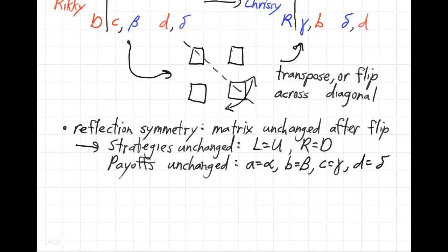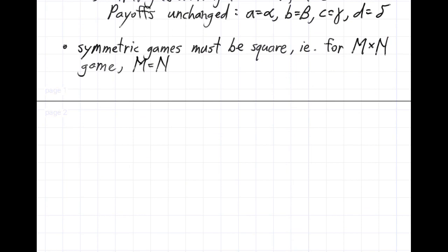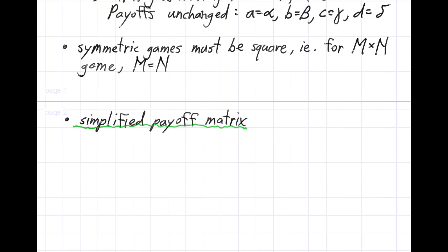A small but important point: symmetric games must have square matrices. For a general M-by-N game, we must have M equal to N — the same number of rows as columns. Think about that and convince yourself it must be true. Given that, we can write our payoff matrix in a simplified way. The term 'simplified payoff matrix' will come up occasionally, and we'll be using simplified payoff matrices a lot in this course.